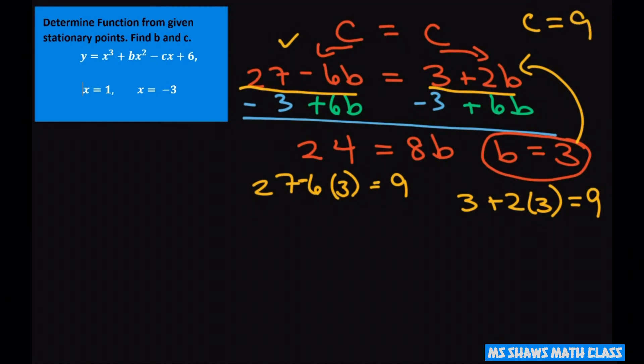And then all you have to do is write out your equation. And your equation is going to be y equals x cubed. Substitute our b was 3, so x cubed plus 3x squared. Our c is 9, so minus 9x plus 6.